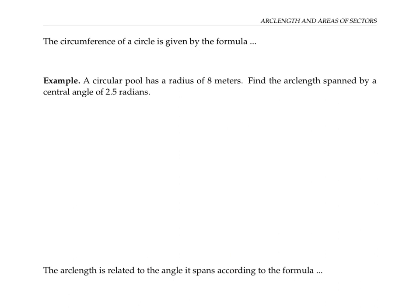The circumference of a circle is given by the formula: the circumference equals two pi times the radius. Let's use that to solve the following problem.